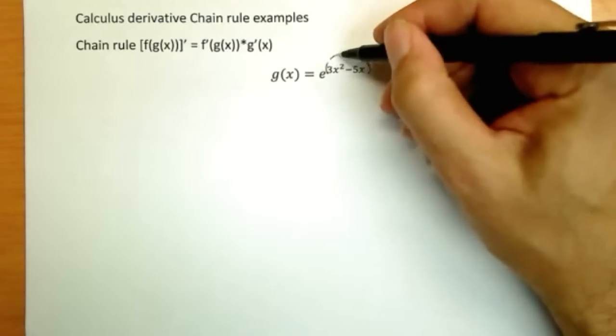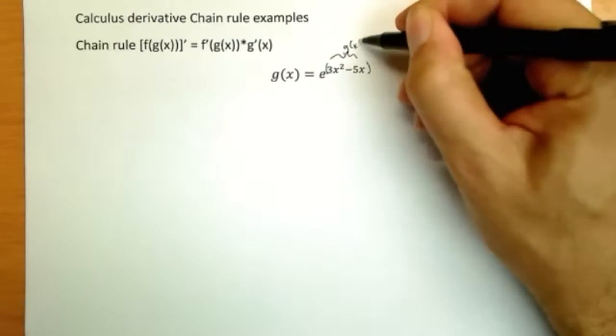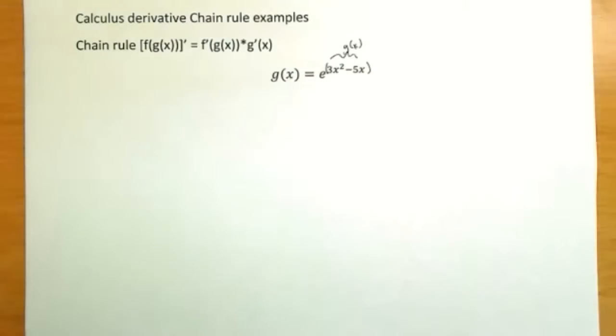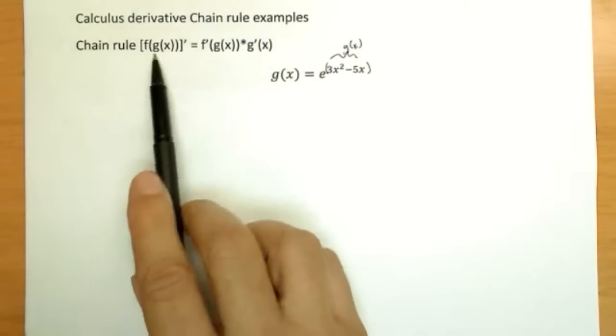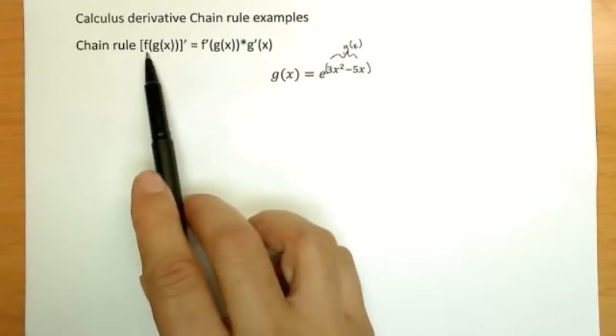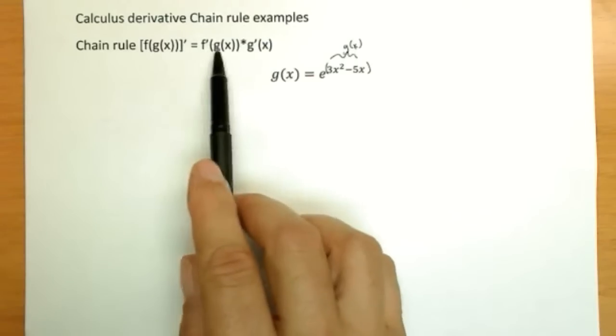In a sense, this is going to be my g of x, and e to the something, e to this thing, is my f of x. You'll recall the chain rule says: to take the derivative of f of g of x, we take the derivative of f, the outside or the first most function, with g of x unchanged, times the derivative of g of x.